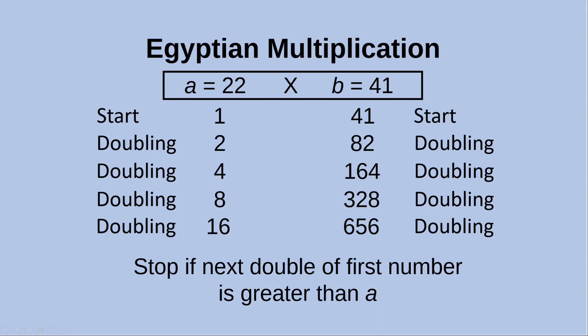Then I do the doubling again: 2 becomes 4 and 82 becomes 164. Continuing, I would have 16 in my first column and 656 in the second column after the doubling process. I stop the doubling because if I doubled 16 I would get 32, which is larger than a which is 22. So I stop at 16 — I stop the doubling whenever the next double of the first column number would exceed a.